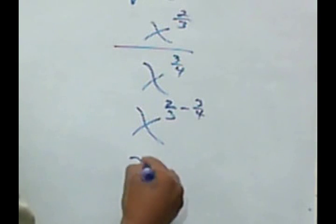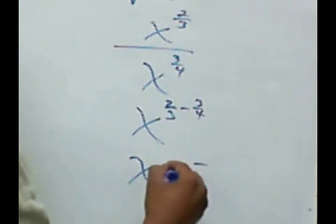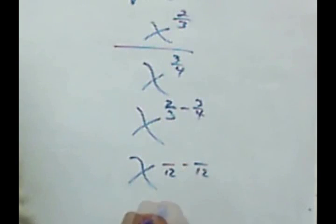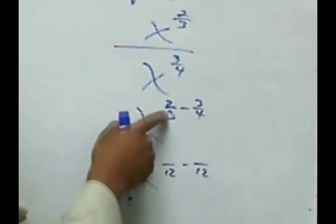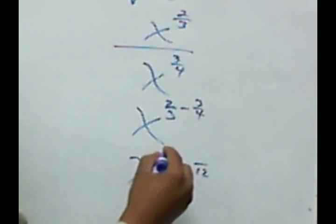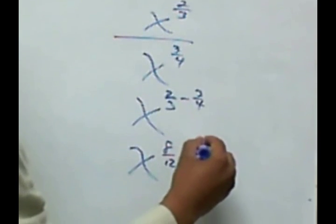Okay, now we get the common denominator, which would be a 12. So I'll multiply this by 4/4, and I get 8. Multiply this by 3/3, and I get 9.